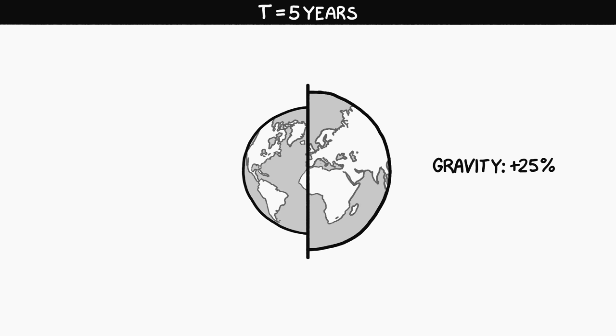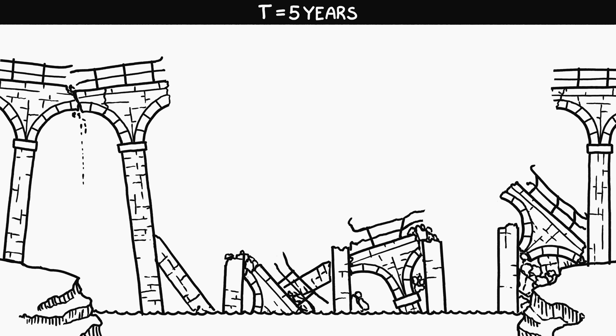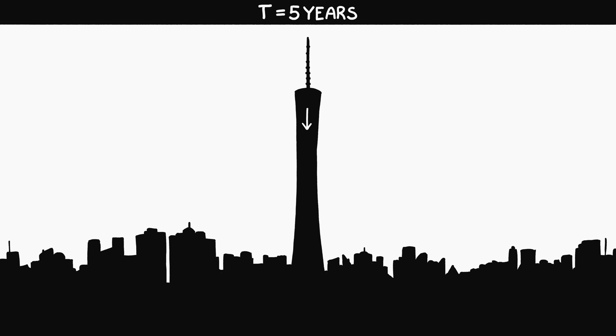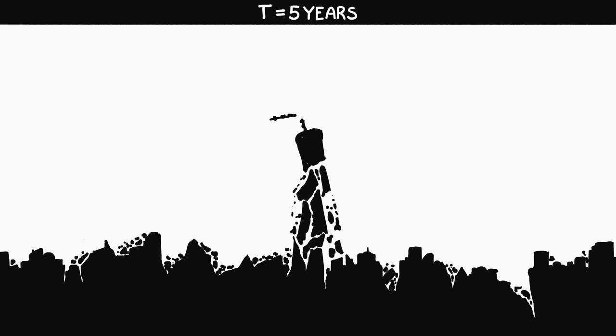After five years, gravity would be 25 percent stronger. If you weighed 70 kilograms when the expansion started, you'd weigh 88 now. Most of our infrastructure would have collapsed. The cause would be the ground expanding by 25 percent, not the increased gravity. Surprisingly, most skyscrapers would hold up fine under much higher gravity. The limiting factor isn't weight, but sheer forces like wind or the ground expanding.